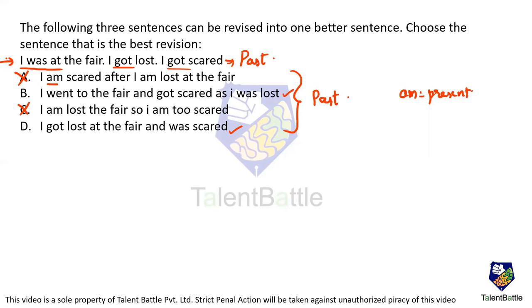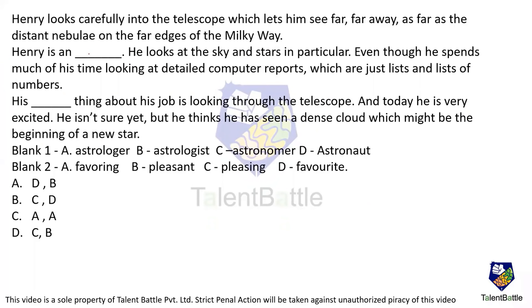In the given sentences it was never mentioned that 'I was going to the fair' — they just said 'I was at the fair.' So 'I went to the fair' in option B becomes extra information that is not required. Option D — 'I got lost at the fair' and then 'I was scared' — gives a perfect answer. So option D is the best version.